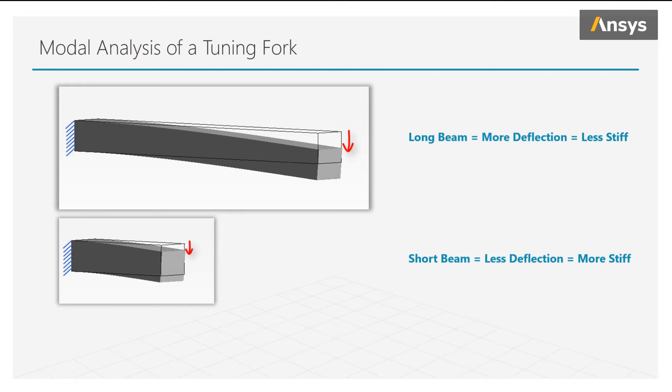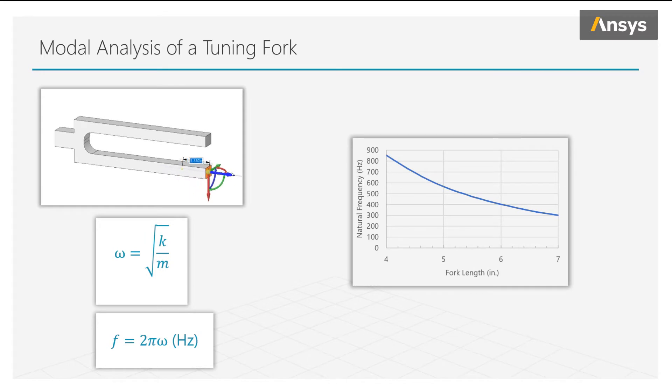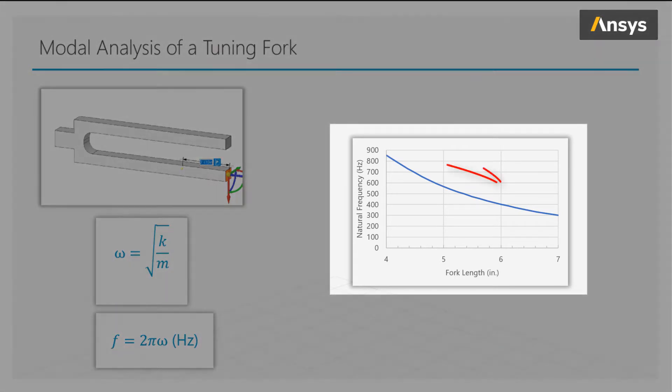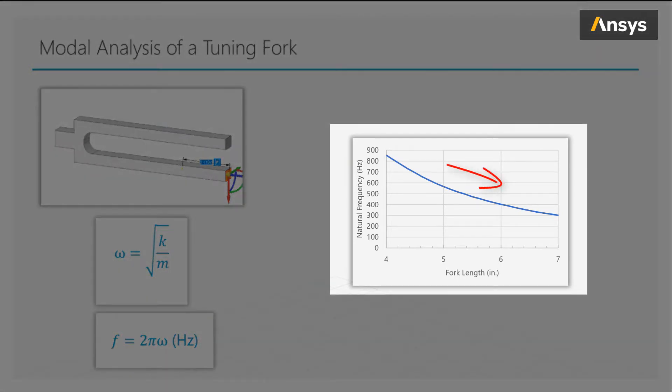So a long beam is less stiff than a short beam. Now relating this back to the tuning fork, if we make the fork arms longer, the stiffness k decreases, and what happens to our natural frequency? In the equation, we can see the natural frequency omega will decrease with decreasing stiffness k. So making our tuning fork longer results in lower natural frequencies, and that's exactly what we see from the simulation results in this graph. Here we show how the length of the fork and the resulting natural frequencies vary.